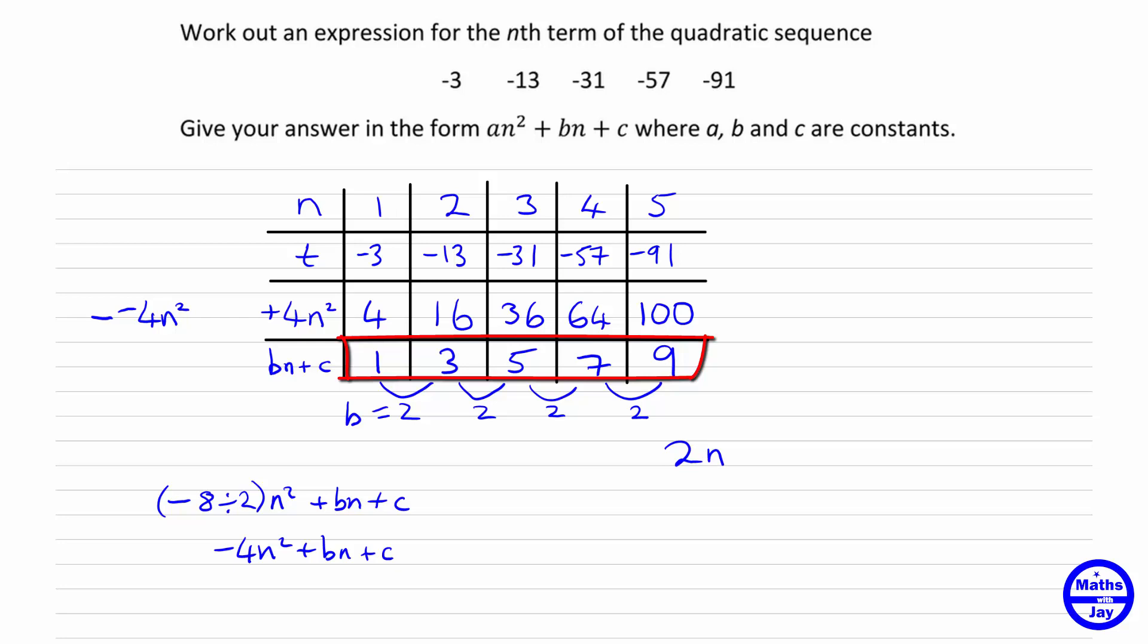So the sequence is 1, 3, 5, 7, 9. So the term before the 1, we need to do the opposite of adding on 2, so we need to take away 2. So 1 minus 2 is negative 1. So the formula for 1, 3, 5, 7, 9 is 2n minus 1.